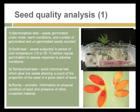The second method is a cold test, where seeds are subjected to a period of cold temperature before regular germination to assess their response to adverse conditions. The third is the TZ test — a quick chemical test which dyes live seeds, allowing a count of the proportion of live seeds in a given batch.